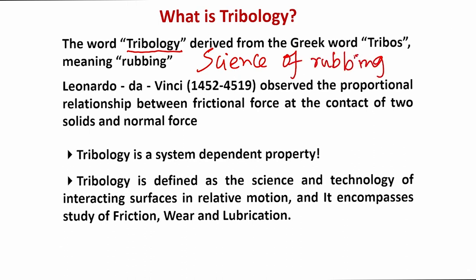The science of rubbing essentially means the interaction when two solids are being rubbed against each other. From a historical perspective, Leonardo da Vinci observed for the first time, a couple of centuries back, that frictional force at the contact of two solids is proportional to the normal force. If the frictional force is F, then F is proportional to N, giving rise to the equation F = μN.